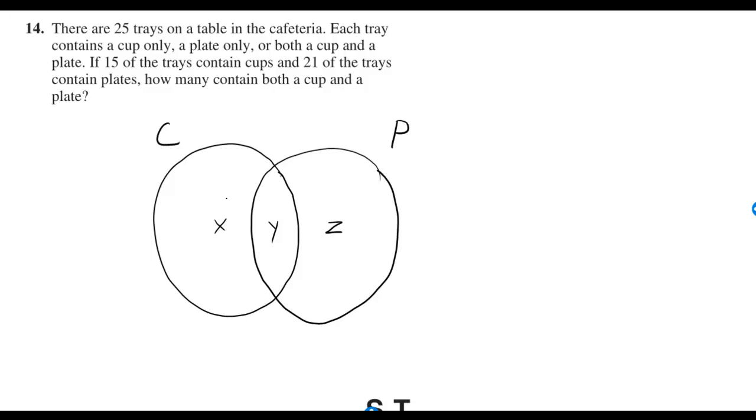Well, X represents the number of trays that contain only cups, Z only plates, and Y plates and cups.